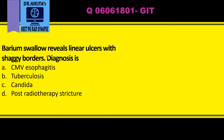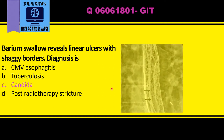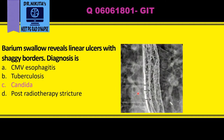Barium swallow reveals linear ulcers with shaggy borders — the diagnosis is candida esophagitis. Candida esophagitis shows longitudinal filling defects caused by plaques, which are the mucosal lesions. These black areas are the plaques, oriented along the axis of the esophagus — that is, longitudinal plaques.